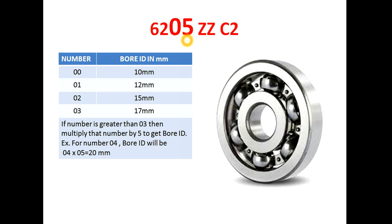For example, if it is mentioned as 05, we multiply 05 by 5 and get 25 mm, which is the bore ID of the bearing. If it is mentioned as 04, then the bore ID is 04 multiplied by 5, which gives us 20 mm. We have now completed the description of the third and fourth digits.